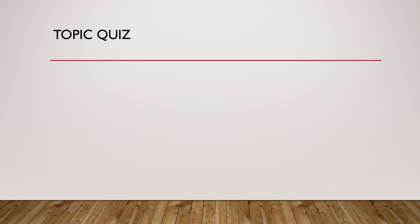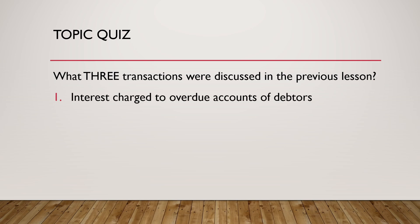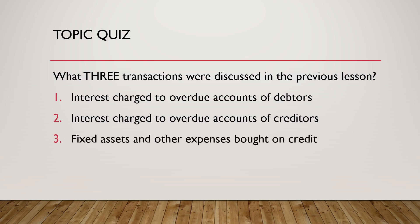Pause the video and take a minute to answer the following questions — see if you understood the previous lesson. Write your answer on a separate paper or page in your exercise book. What three transactions were discussed in the previous lesson? Pause your video now. The answers: interest charged to overdue accounts of debtors, interest charged to overdue accounts of creditors, and fixed assets and other expenses bought on credit.